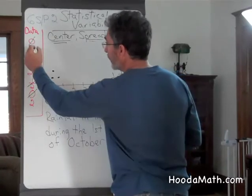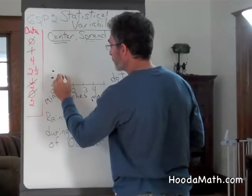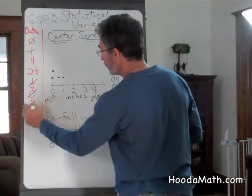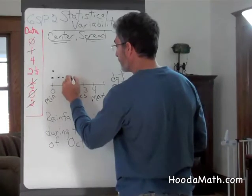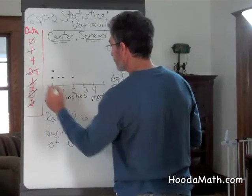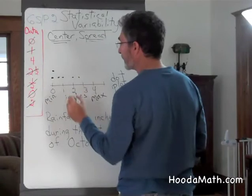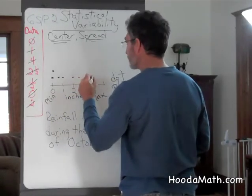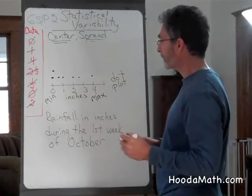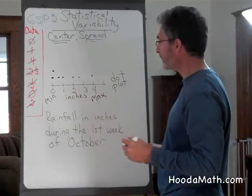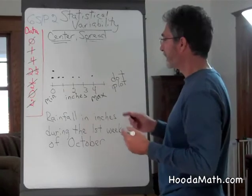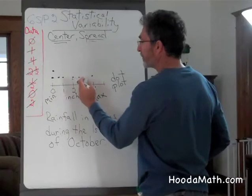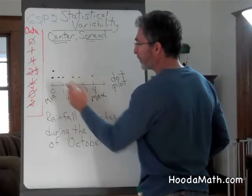It rained one inch one day also, and then it rained two inches one day, two and a half inches one day, and four inches one day. You can see by looking at the dot plot that a lot of the rain happened below two inches.